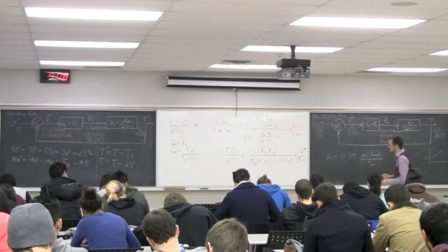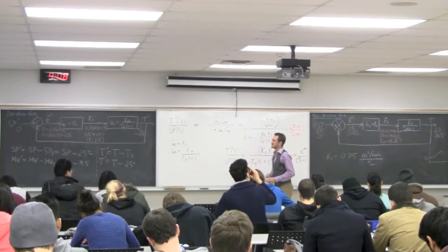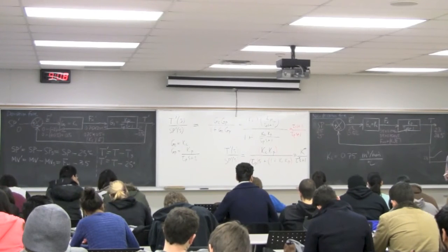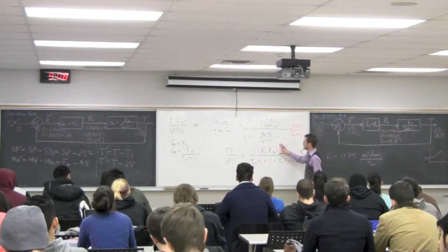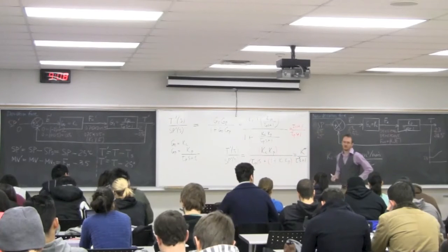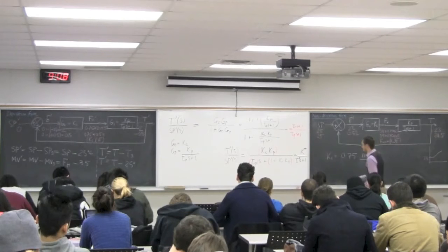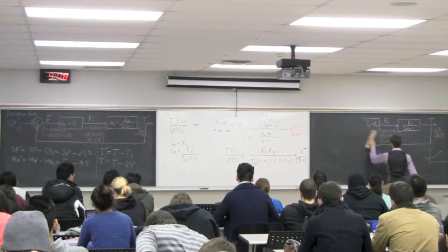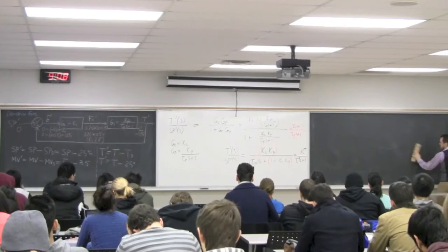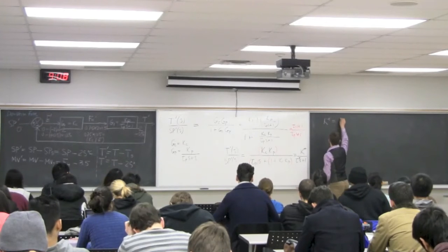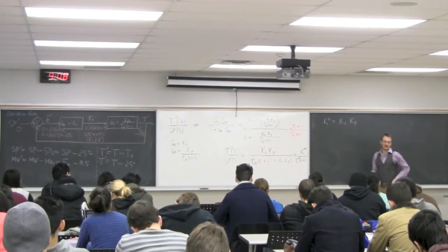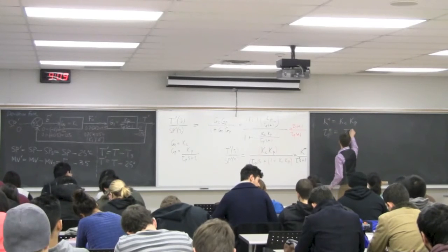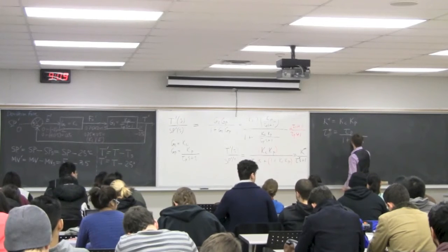This says that if I make a change in my input SP, the overall output temperature will behave as a first-order system with gain K-star and time constant tau-star. Specifically: K-star = Kc × Kp / (1 + Kc × Kp), and tau-star = tau-p / (1 + Kc × Kp). So the closed-loop time constant is faster than the open-loop time constant.